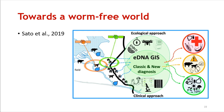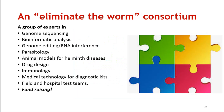We need to have some targets for this. If COVID could be done within a year, we can surely try to do something by next year. For that, we need an Eliminate the Worm Consortium of experts in genome sequencing, data analysis, genome editing and RNA interference, parasitology, animal models for these diseases, drug design, immunology, medical technology for diagnostic kits, and field and hospital test teams. We need funding — maybe Bill and Melinda Gates will be interested, maybe we can look for some Infosys funding — but we need to unite first and do this job together.